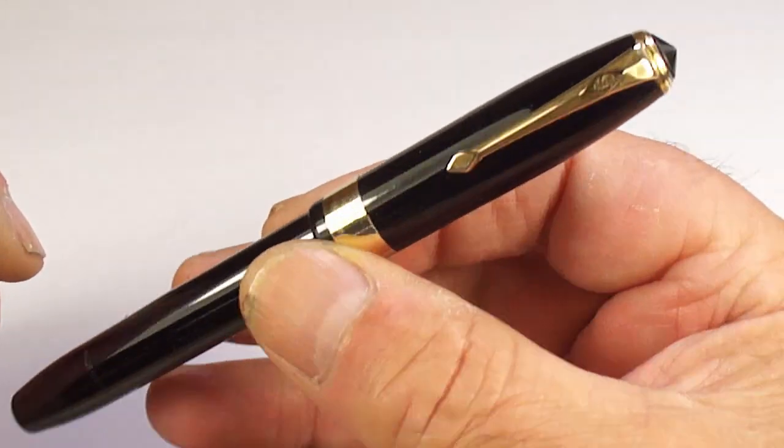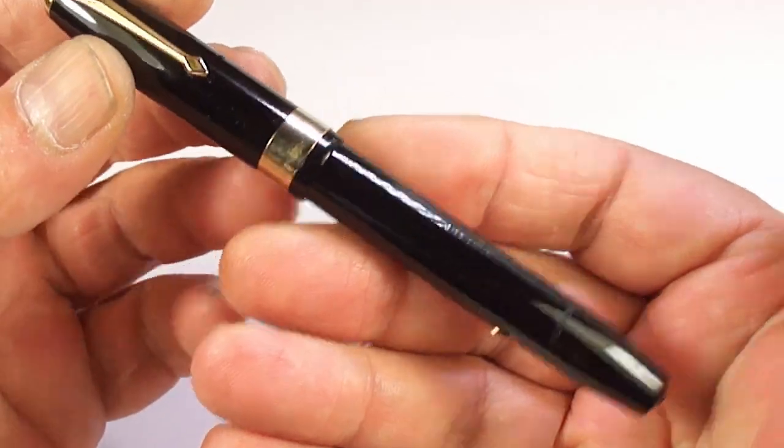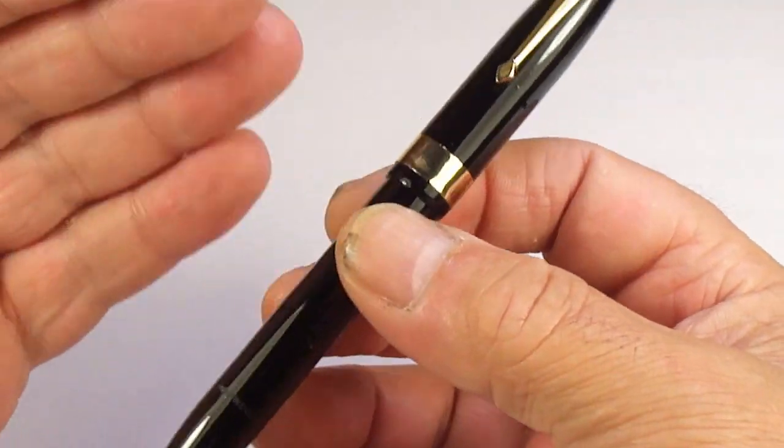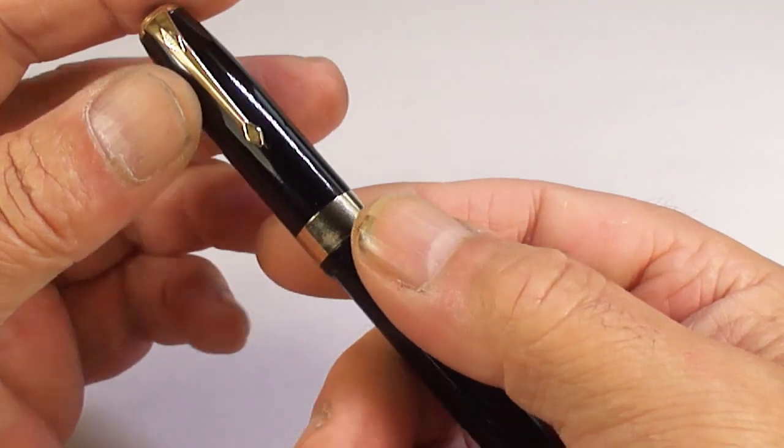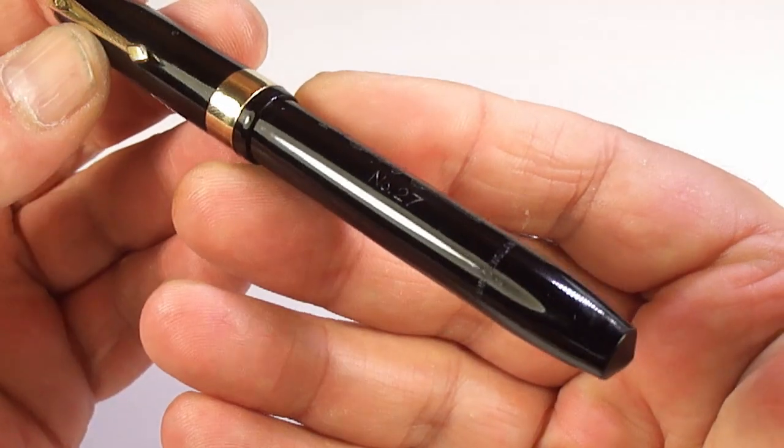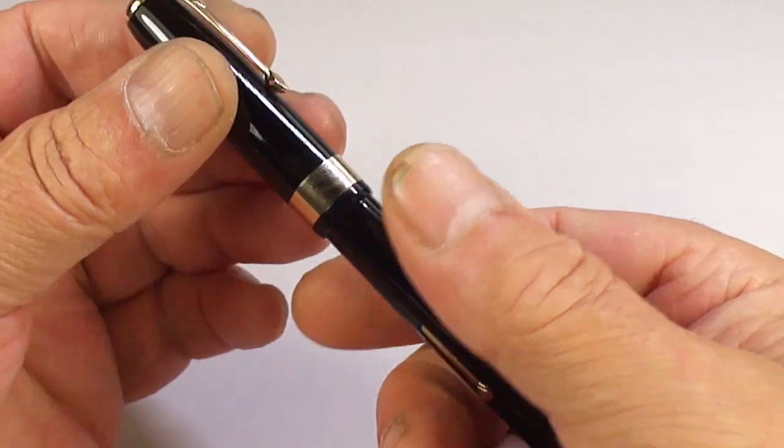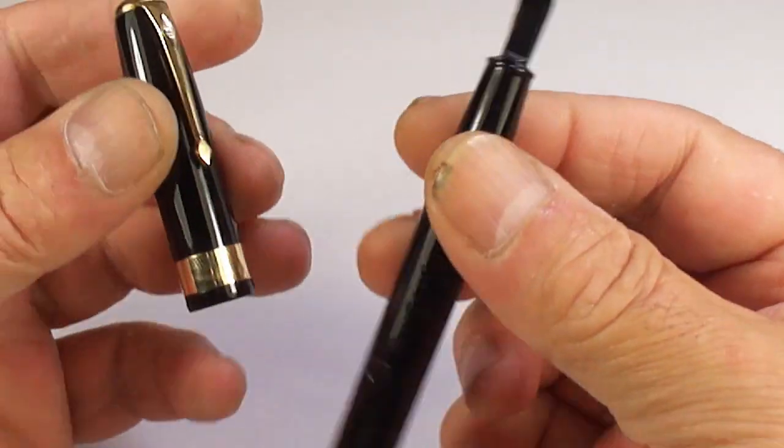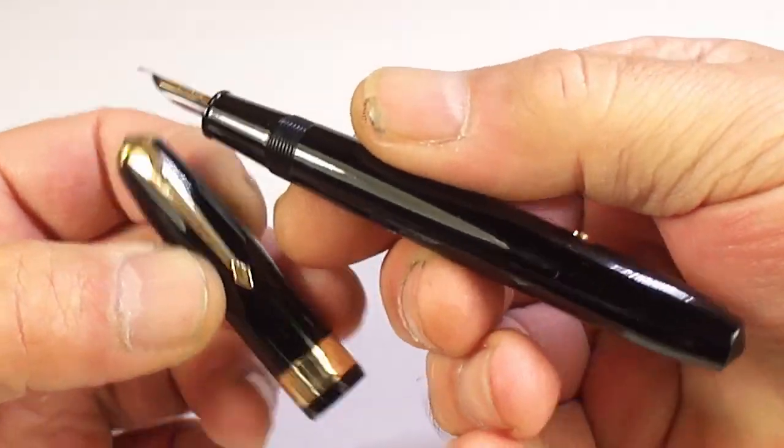So a lovely clear barrel imprint. A superb Conway Stewart 27, the earlier version in beautiful classic black. This is one of the pens from one of my recent pen hauls. I've fully restored it, we've put a brand new sack in the pen, and we're going to find a new home for this beautiful pen.